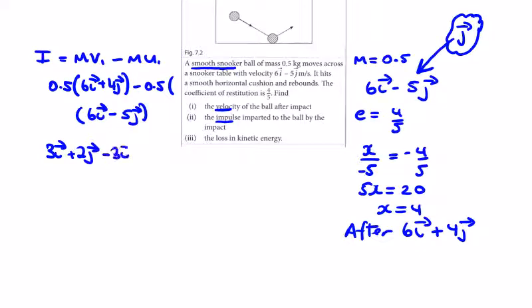So impulse equals 4.5j newton seconds. Part 3: loss of kinetic energy. The change in a half mu squared.